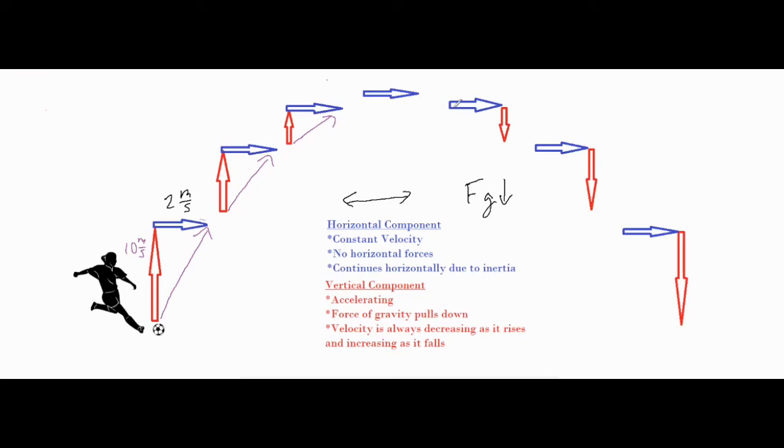When it drops that velocity begins to increase because our red arrow which is representative of our vertical component is increasing because it and gravity are moving in the same direction. Therefore it is increasing and we still have that horizontal component that keeps it moving.